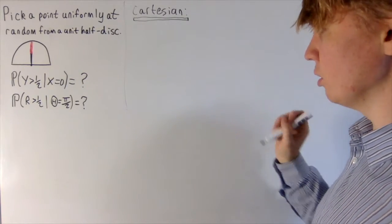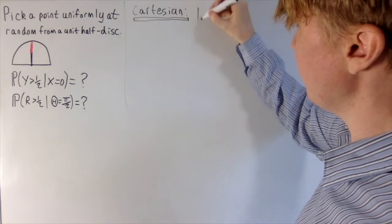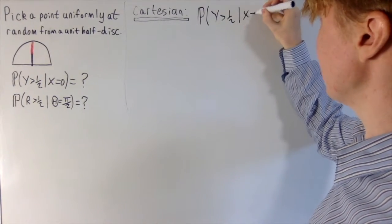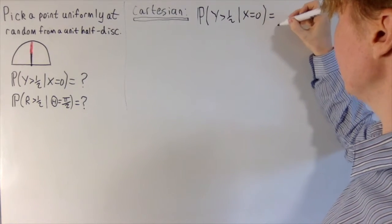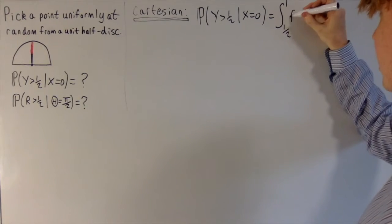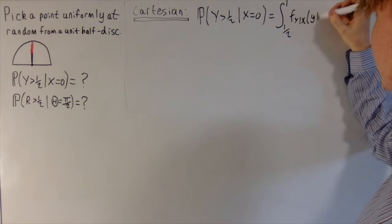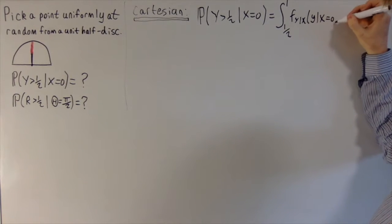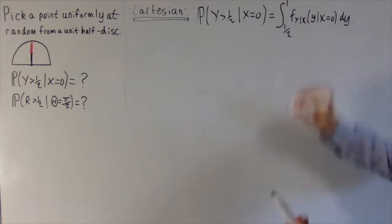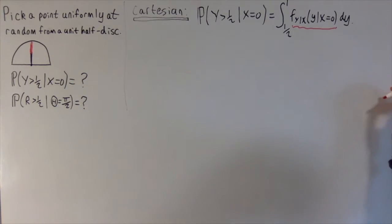What we'll do is use the conditional probability density function. So the probability that y is greater than one half, given that x equals zero — what I can do is write this as the integral from one half to one of the conditional probability density function for y conditioned on x being equal to zero. So now the question is: what is this conditional PDF equal to?